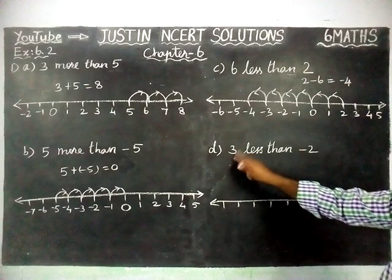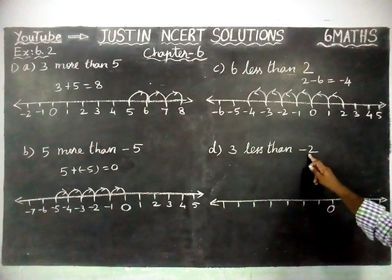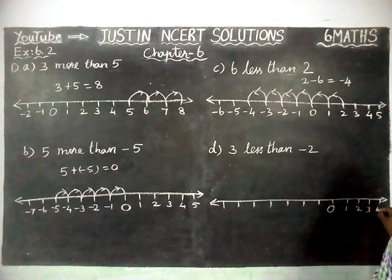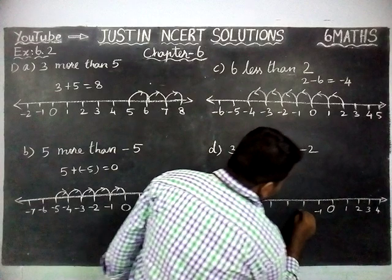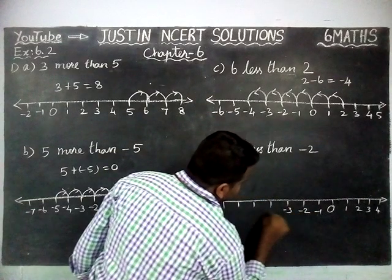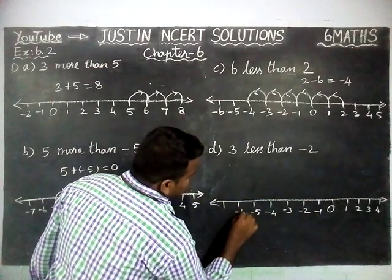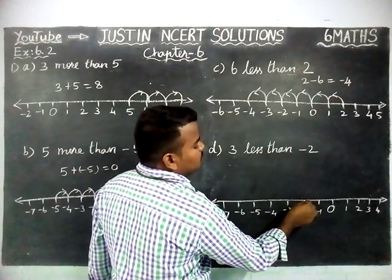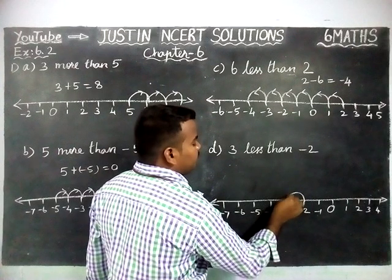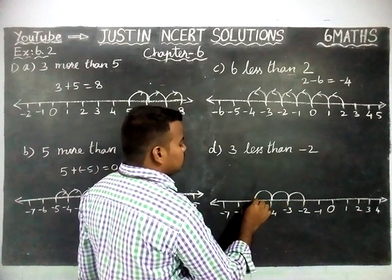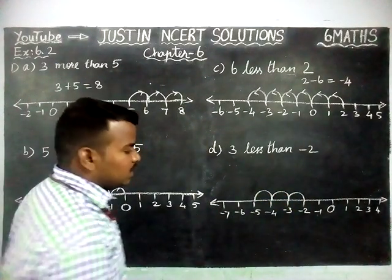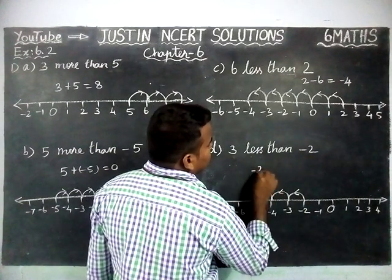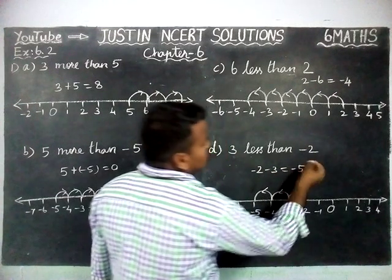Part (d): 3 less than minus 2. We start from minus 2. On the number line, positive numbers: 1, 2, 3, 4; negative numbers: minus 1, minus 2, minus 3, minus 4, minus 5, minus 6, minus 7. From minus 2, we move 3 steps left: 1, 2, 3. So 3 less than minus 2 equals minus 2 minus 3, which is equal to minus 5.